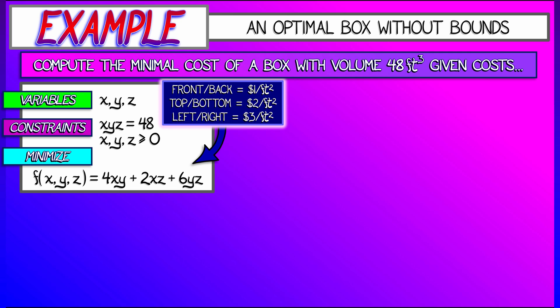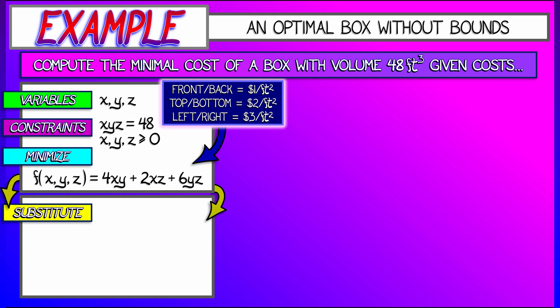Now I've matched up X, Y, and Z with this front, back, top, bottom, left, right in a way that's hopefully not too confusing. To solve this, we're going to use the constraint to solve for Z as a function of X and Y. Z is 48 divided by X times Y. Substituting that back into f gives us a function 4XY plus 96 divided by Y plus 288 divided by X. That's a function of two variables, X and Y.